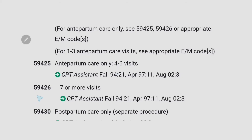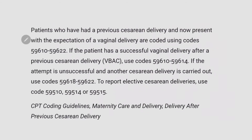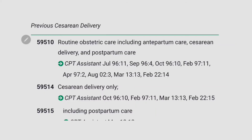Next codes: 59414 for delivery of placenta. 59425 for antepartum care only, 4 to 6 visits. 59426 for 7 or more visits. 59430 for postpartum care only. Next important codes are for caesarean delivery: 59510 is for routine obstetric care including antepartum care, caesarean delivery, and postpartum care — highlight this.